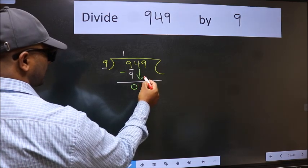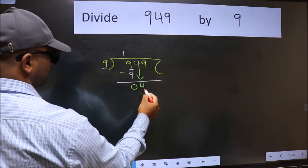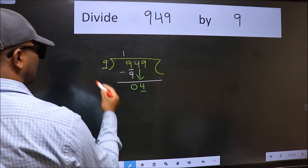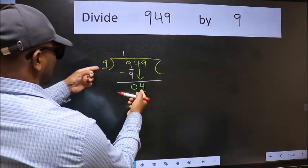After this bring down the beside number. So 4 down. Now here we have 4 and here 9. 4 is smaller than 9.